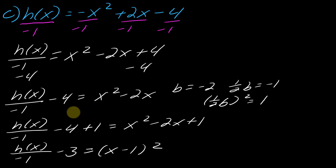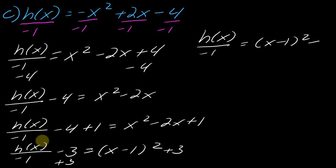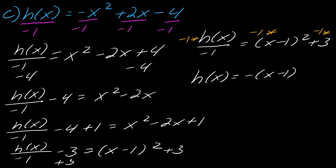Now I want to solve for h(x). First I need to add three: h(x) over negative one equals x minus one squared plus three. And now I just have to multiply everything by negative one — remember, multiply everything. Don't forget the last number. So my equation in this case is going to be h(x) equals negative one times x minus one squared minus three.